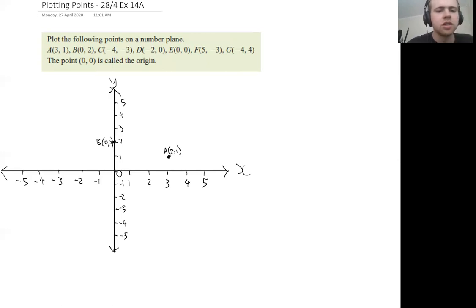For C, we need to go to negative four on the x-axis. Remember, always the first number is the horizontal one first, so negative four, and then negative three, which has got to be about here. That's C.